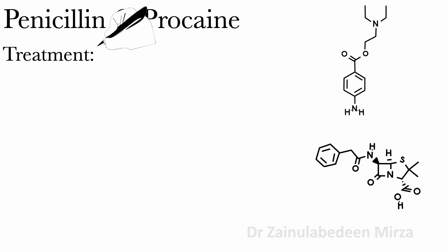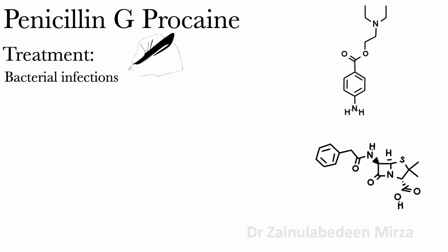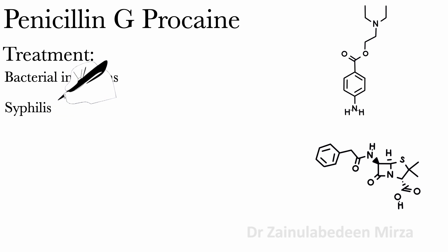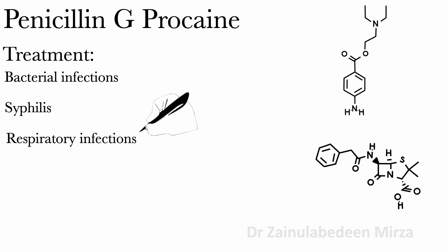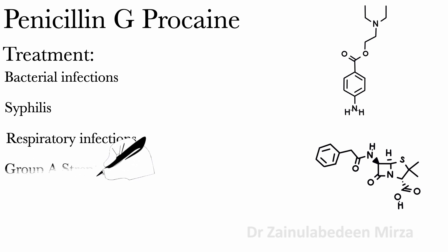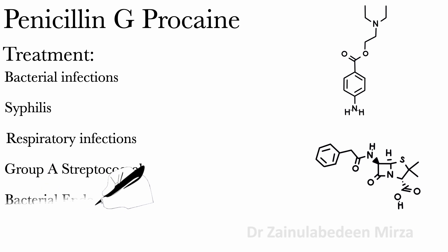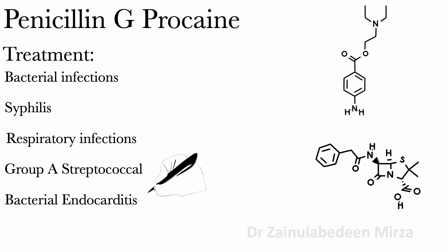Penicillin G-procaine is used to treat bacterial infections, syphilis, respiratory infections, group A streptococcal infections, and bacterial endocarditis.